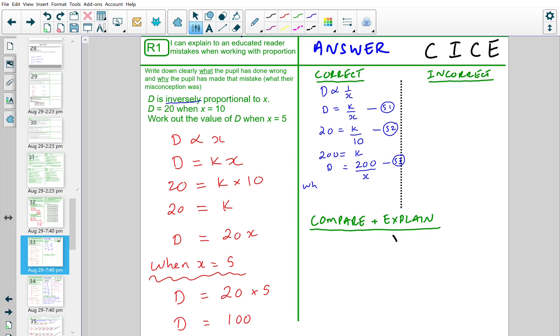Here, we write when x equals 5. We now need to substitute this x in step 3 with 5. So D equal 200 divided by 5, which is equal to 40. This is my correct answer.